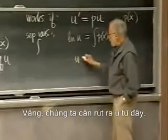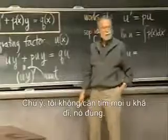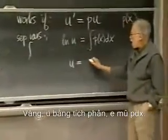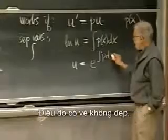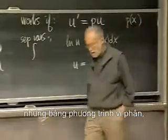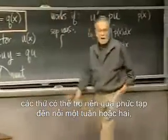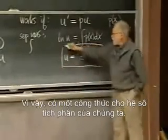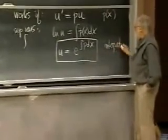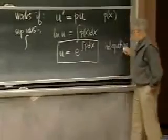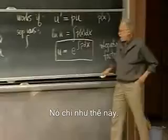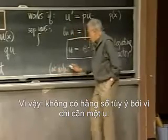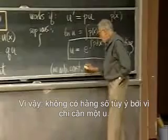Well, that doesn't tell us yet what u is. What should u be? Notice, I don't have to find every possible u which works — all I'm looking for is one. All I want is a single u which satisfies that equation. Well, u equals e to the integral of p dx. That's not too beautiful looking, but in a week or two you will think of this as an extremely simple formula. So, there's the formula for our integrating factor. We've found it. We will always be able to write an integrating factor. Don't worry about the arbitrary constant because you only need one such u — no arbitrary constant since only one u is needed.